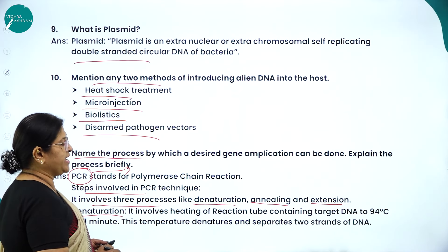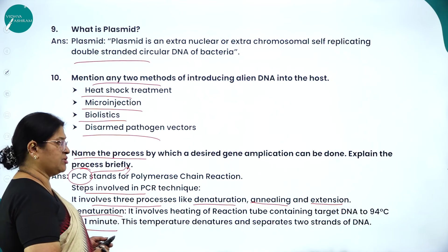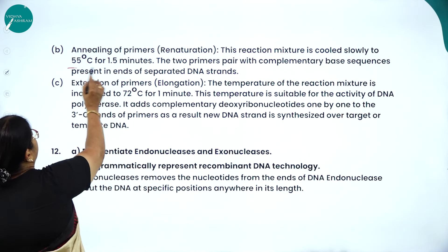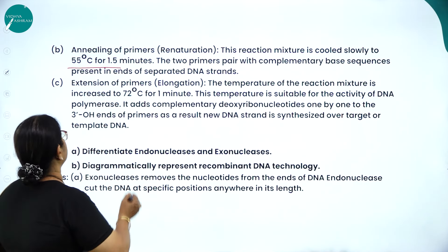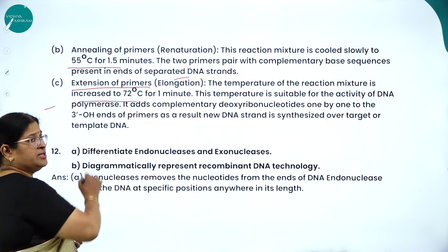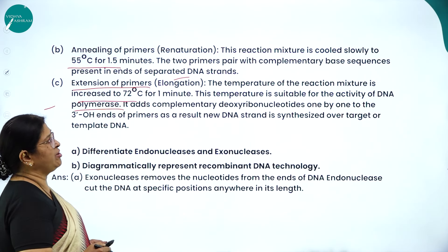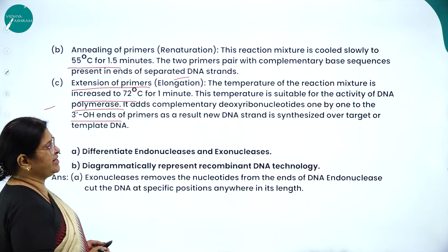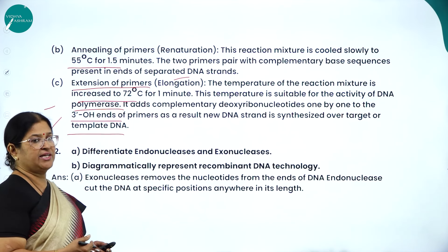In denaturation, the reaction tube containing target DNA is heated to 94°C for one minute, which denatures and separates the two DNA strands. In annealing, the mixture is cooled slowly to 55°C for 1.5 minutes, and two primers pair with complementary base sequences at the ends of the separated strands. In extension, the temperature is increased to 72°C for one minute — suitable for DNA polymerase activity — which adds complementary deoxyribonucleotides to the 3'-hydroxyl ends of primers, synthesizing a new DNA strand over the template.